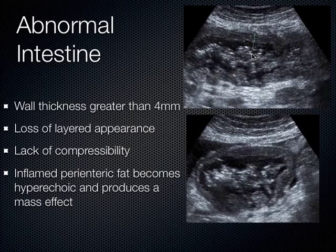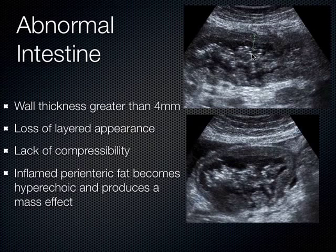In normal individuals, when you compress the bowel, they're all slipping and sliding — it's called the sliding organ sign. They slide amongst one another in the peritoneal cavity. When you have abnormal intestine, you lose that sliding, that layered appearance, and you lose the compressibility. Abnormal bowel — specifically when talking about appendicitis — is a non-compressible tubular structure. Sometimes you get perienteric fat around the rim of the intestine when there's inflammation going on.